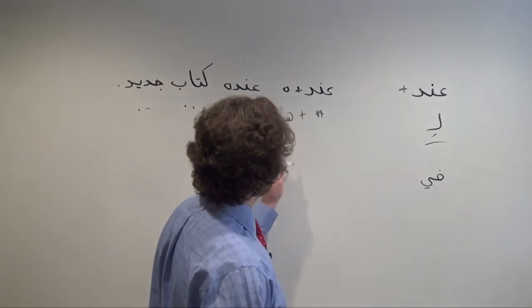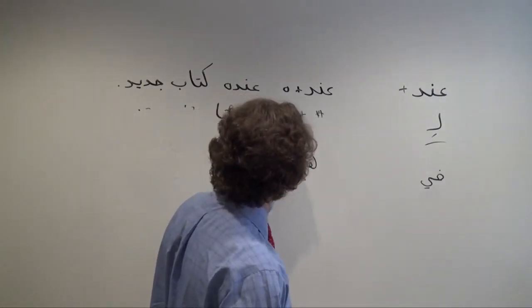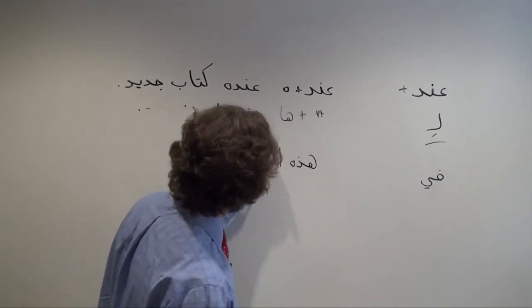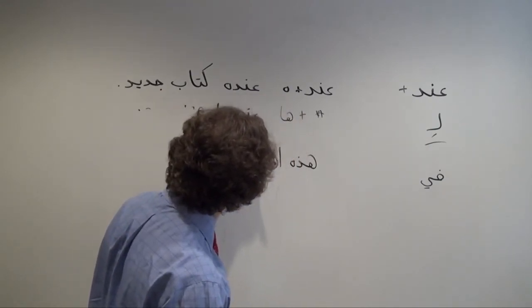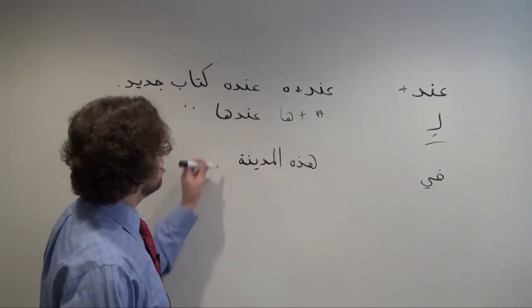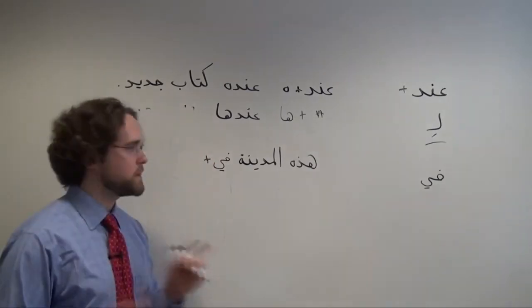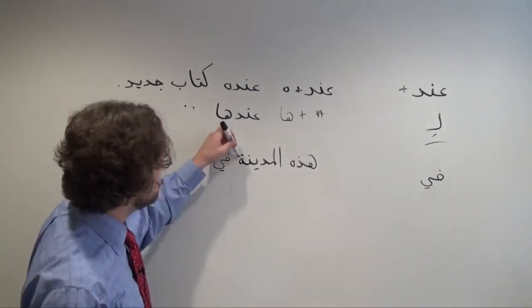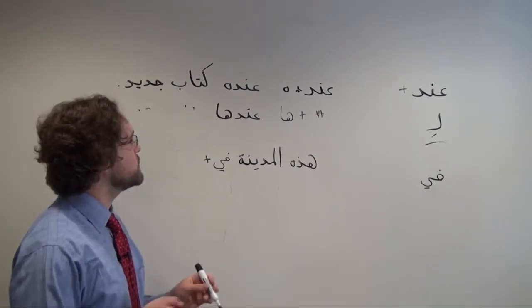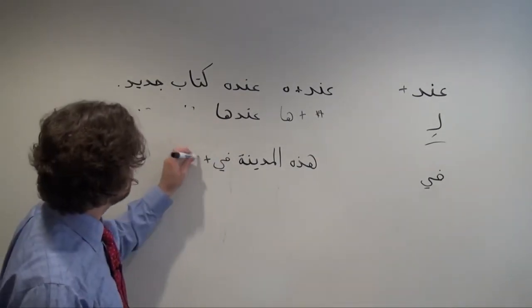I might say هَدْهِ الْمَدِينَةِ, this town, في plus that suffix, right? And مدينة is feminine, we know that because of the تامربوطة here, so I know that I'm going to need to use the feminine suffix حَا, so I'm going to wind up with